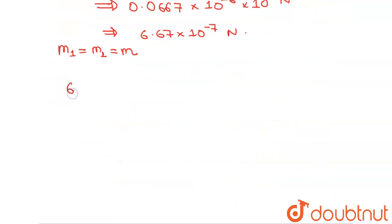So this will give us 6.67 times 10 to the power minus 7. F equals G m₁ m₂ over r squared, that is 6.67 times 10 to the power minus 11 times m squared over r squared, which is 1 squared.